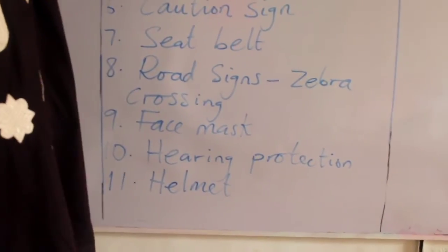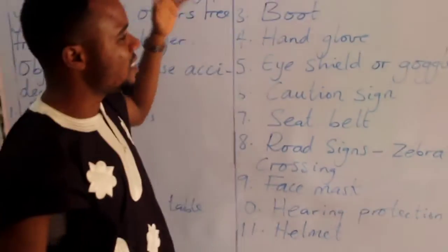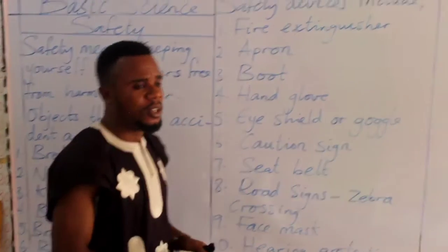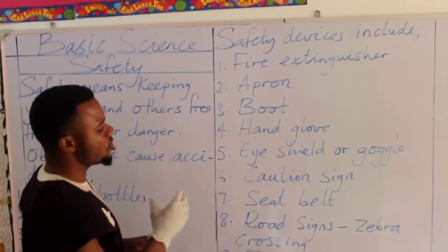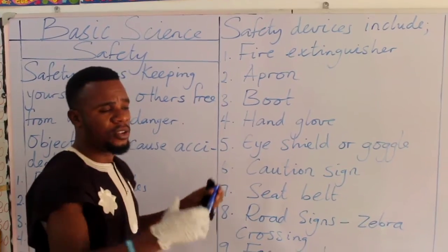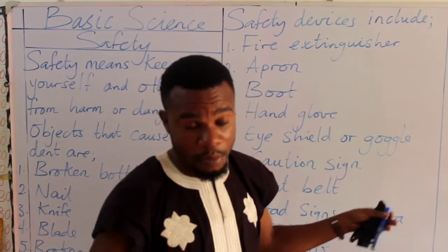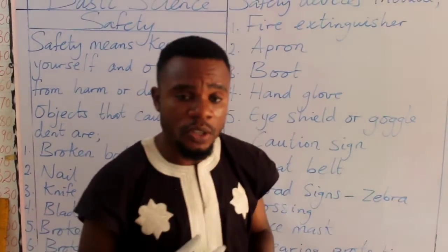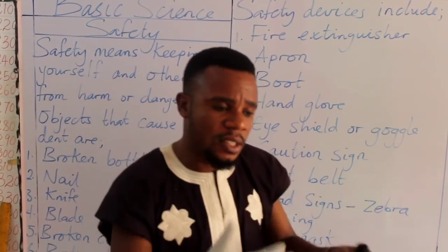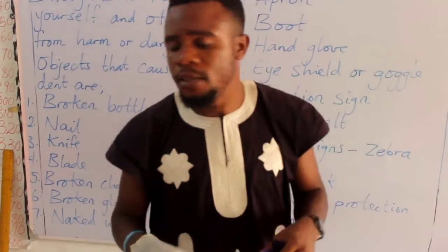These are the safety devices we have in basic science under safety. We have lots more, but these are the essential ones you need to know — like your lab coat. When you put on your lab coat as a scientist, it protects your clothes from being stained.